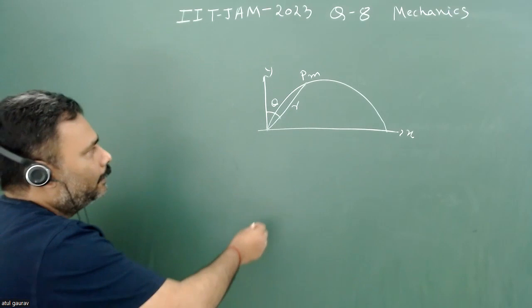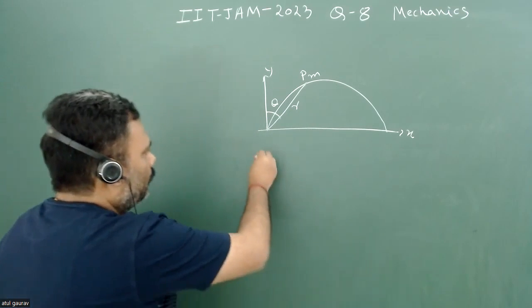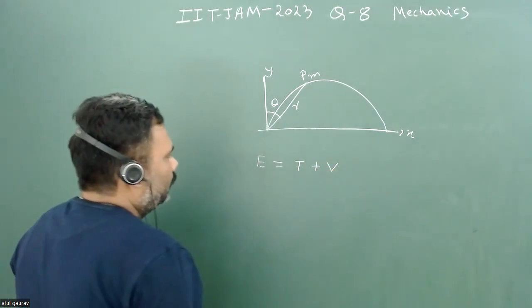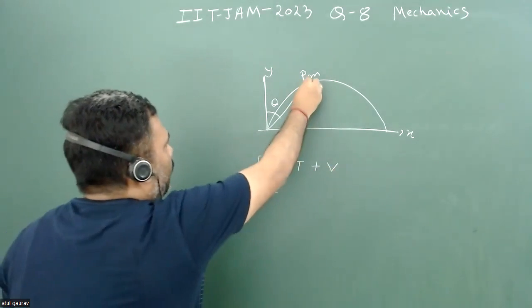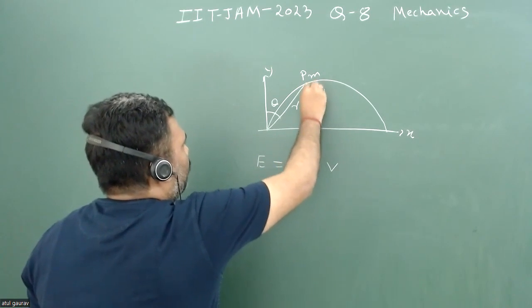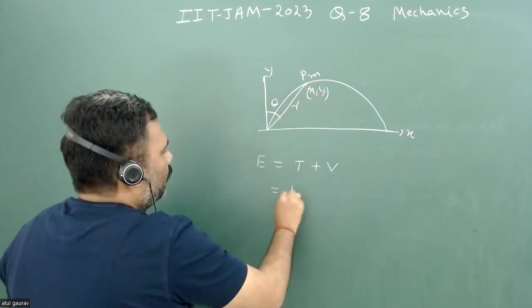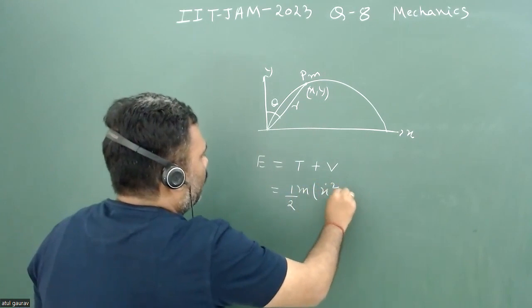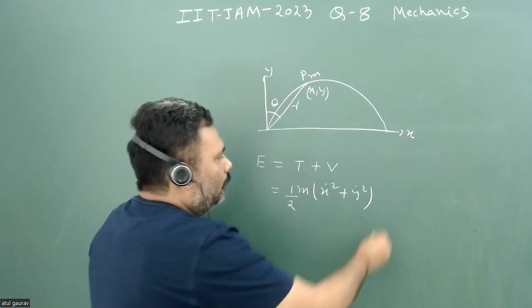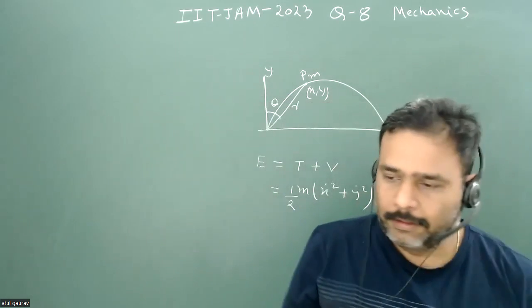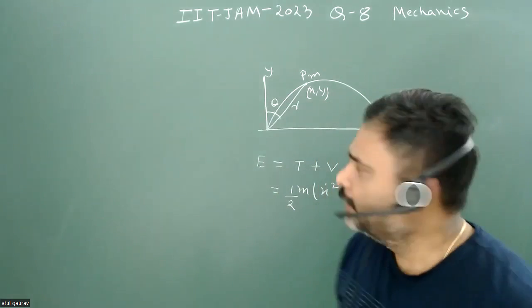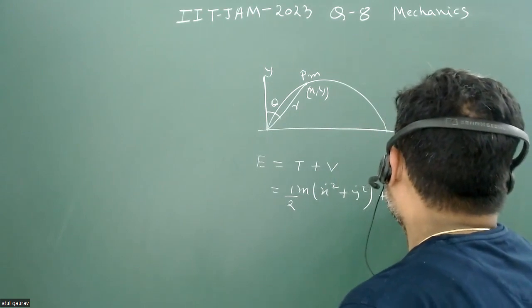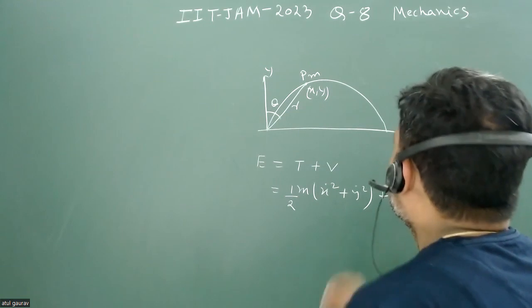So let me write this total energy. Total energy is nothing but kinetic energy plus potential energy. So here in Cartesian coordinates, I can write X and Y, then the kinetic energy is half M times X dot square plus Y dot square. And what will be my potential energy? So here is the catch.